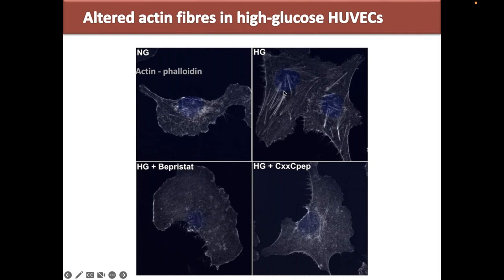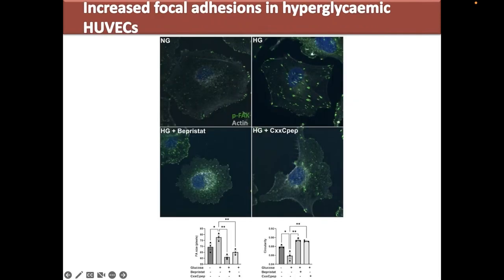The formation of actin fibers is correlated with increased adhesiveness and focal adhesion. We decided to probe for phospho-FAK to look at focal adhesions. High glucose cells form chunky focal adhesions that are not really present in normal glucose cells and that spread along stress fibers. This is obviously reduced in the presence of a whole-cell PDI inhibitor as well as a PEC-PDI inhibitor.